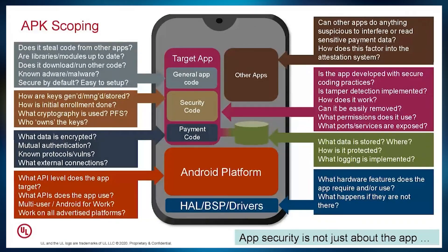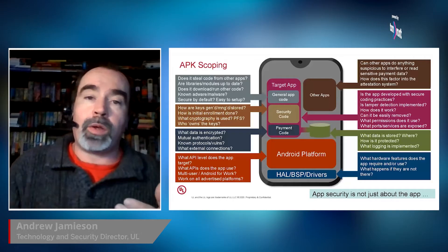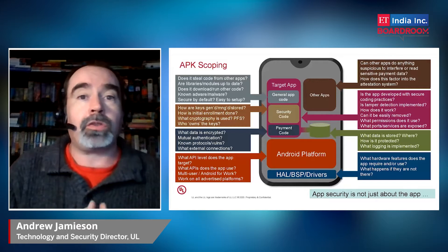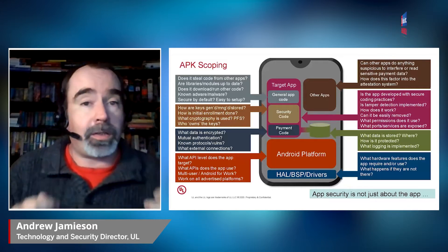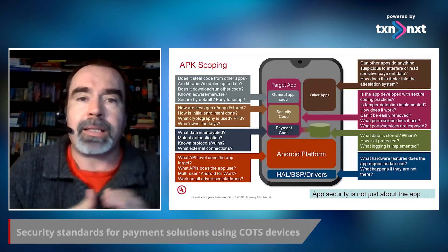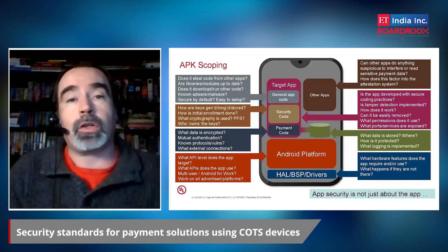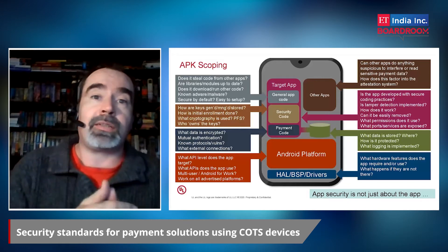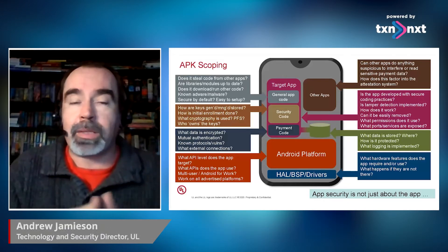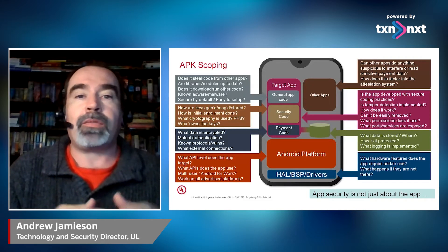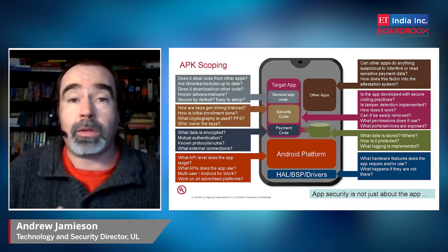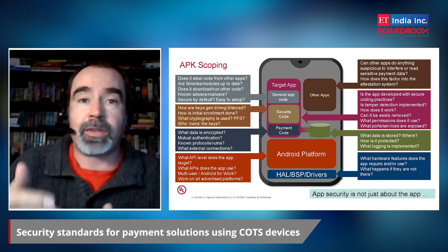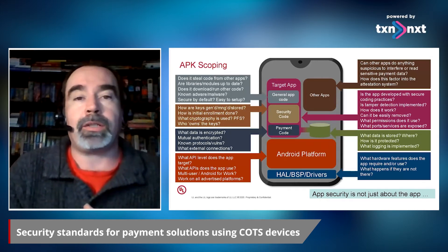In terms of CPoC, we have a similar solution but we no longer have that SCRP. We don't have that external approved PTS device being used to accept card data — we're accepting card data directly onto the COTS system. However, in this situation we don't have the ability to accept PIN, at least in the current version of the standard. We still have the back-end monitoring and attestation solution, but we don't have the ability to read physical contact EMV cards — it can only be contactless.